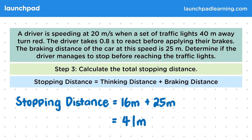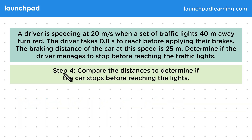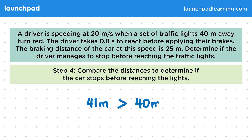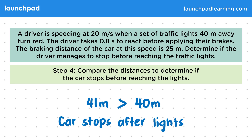Remember, the question didn't just ask us to calculate this distance — we have one more step. In step four, compare the distances to determine if the car stops before reaching the lights. We've calculated a stopping distance of 41 metres, which is greater than 40 metres. This means that the car stops after the lights, which is the final answer the question is looking for.